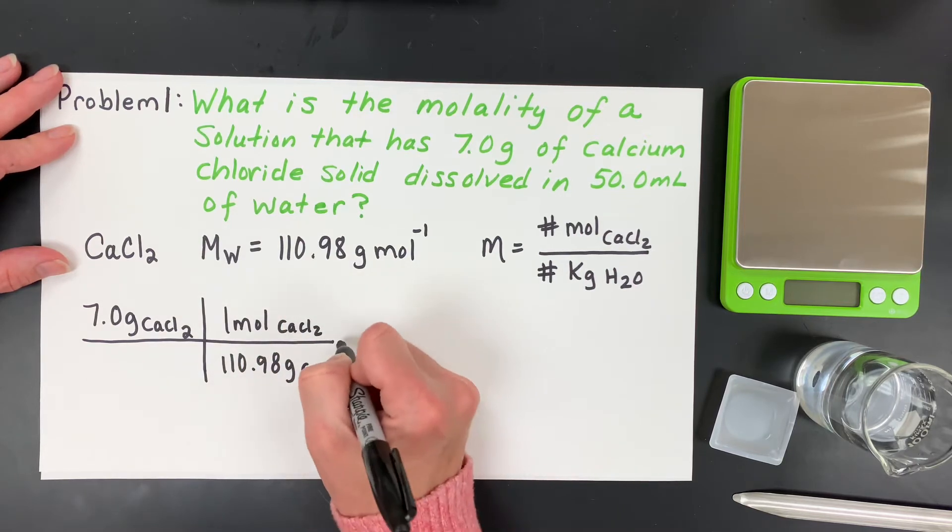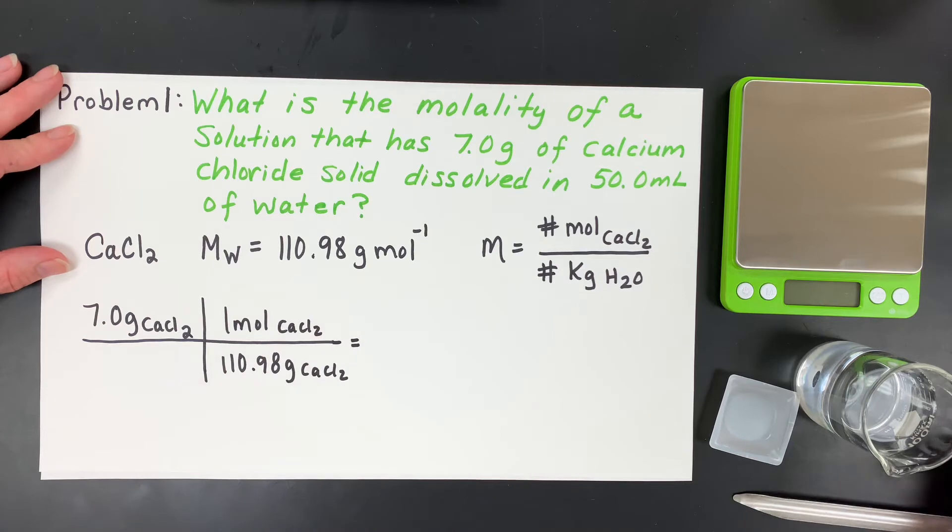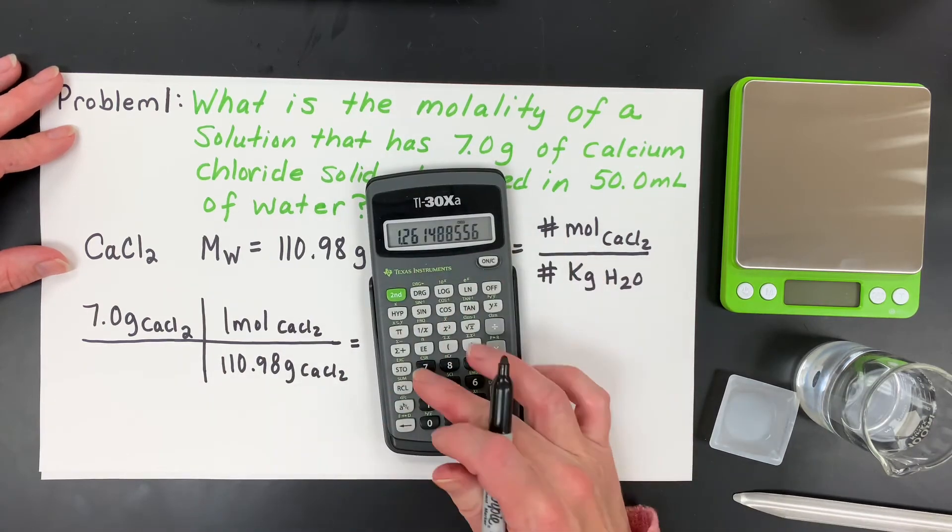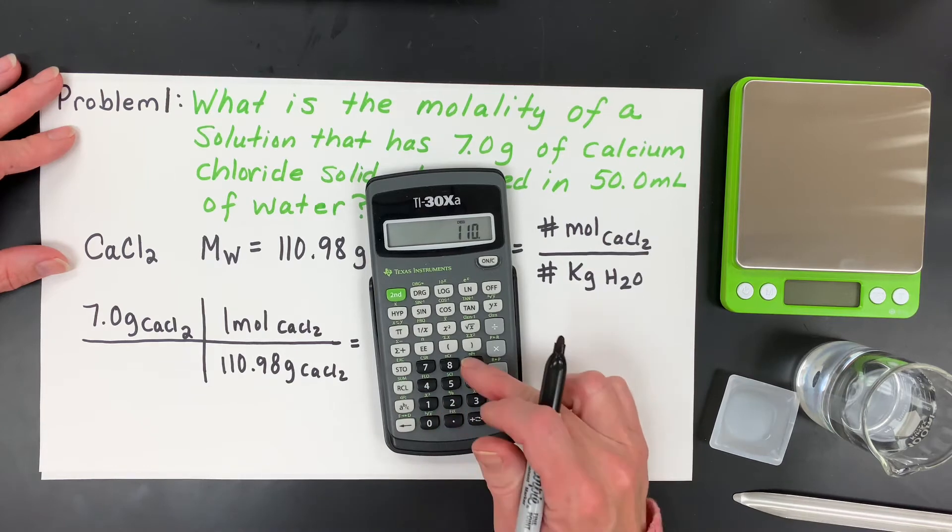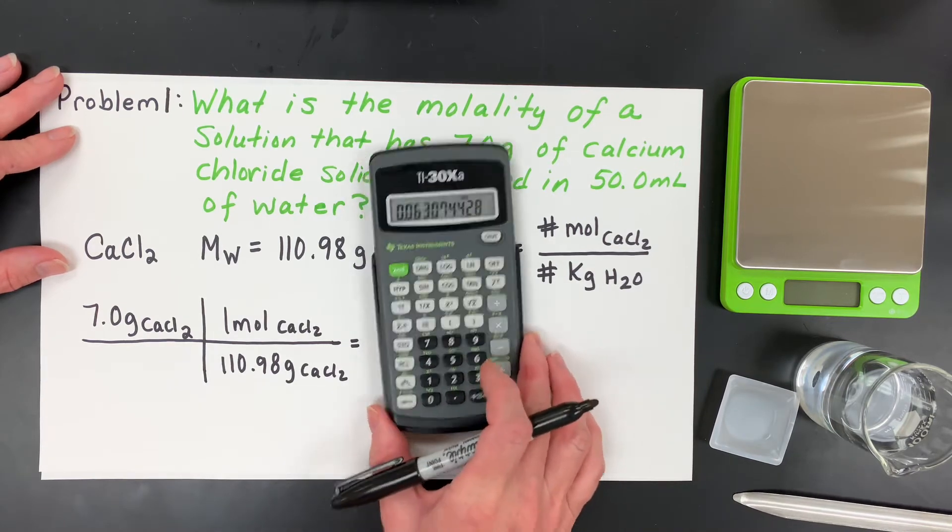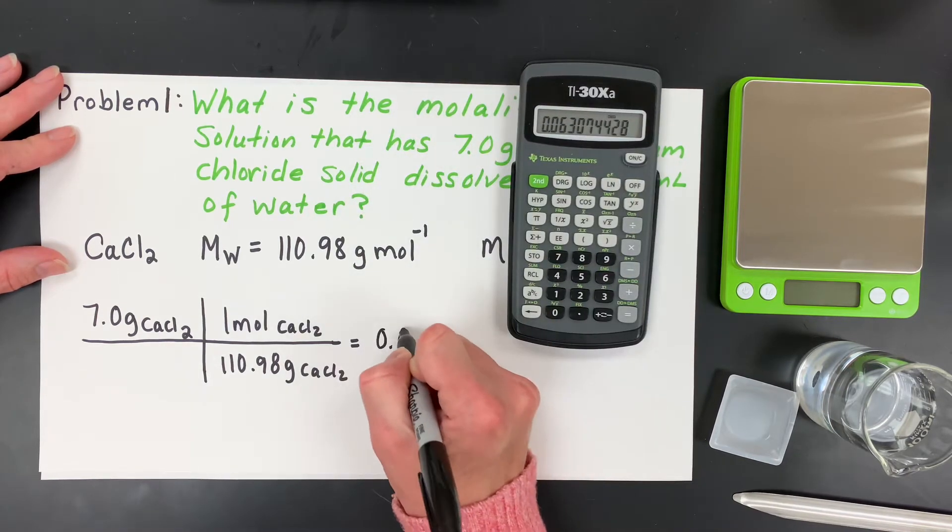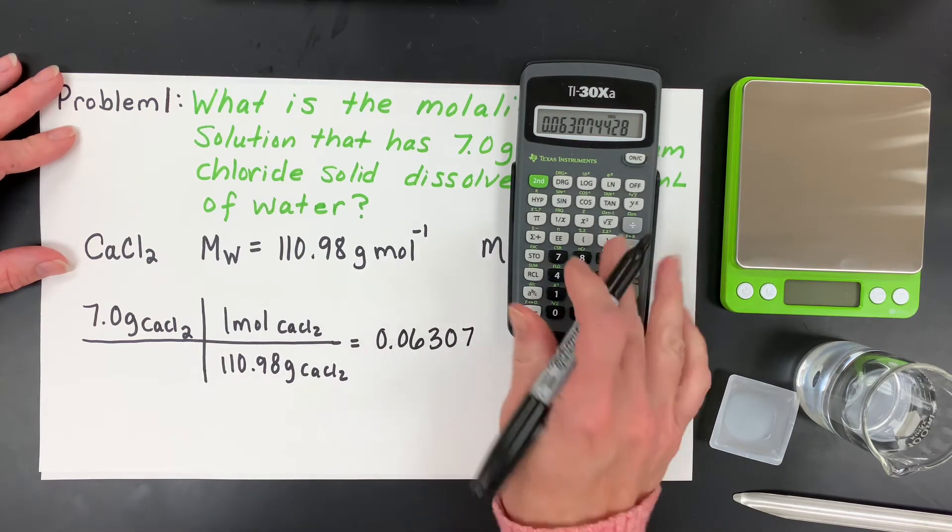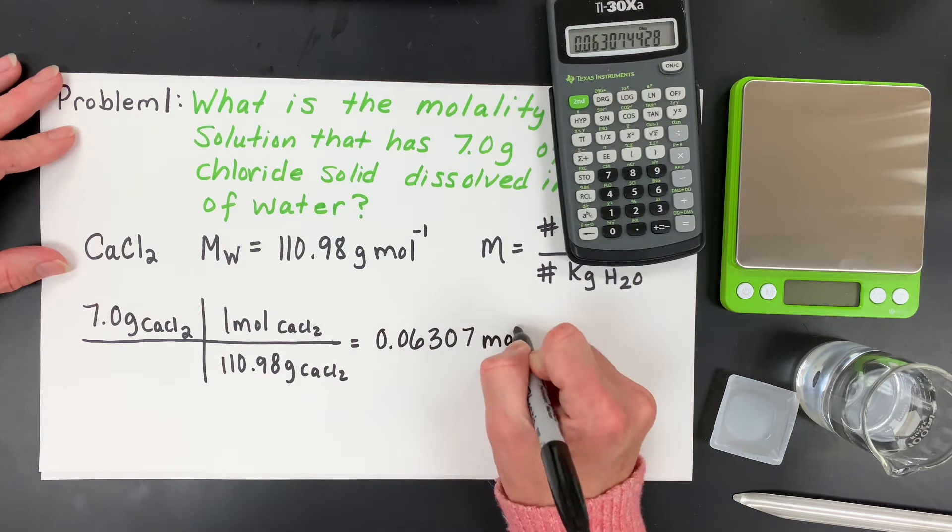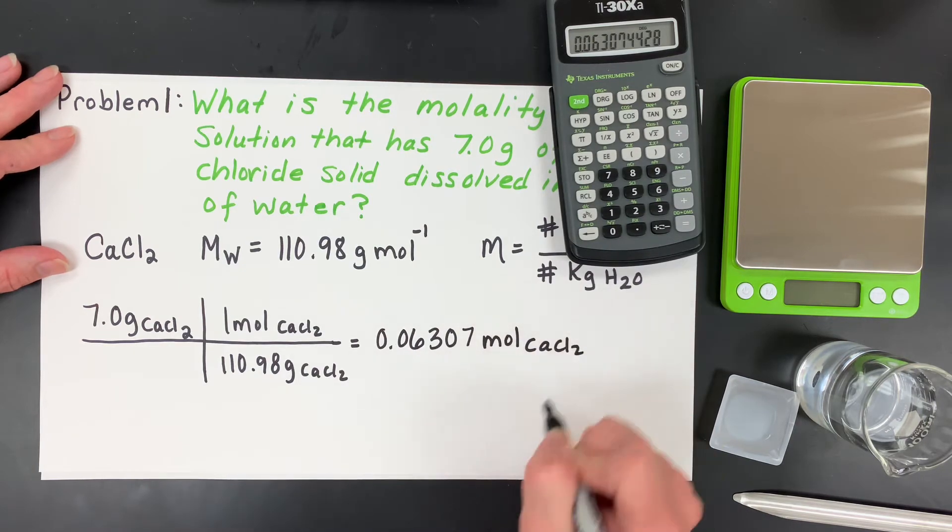I'm going to do a number unit label. If you grab your calculator, what we're doing is we're trying to find this small mole amount because we have only 7, and it's 110.98 for one mole. So we get 0.0630, and I'll just keep the 7, carrying a few extra figs. So that's my moles of calcium chloride.